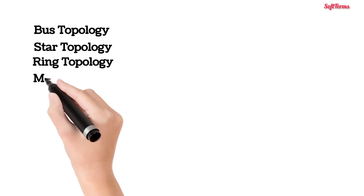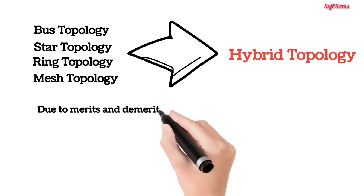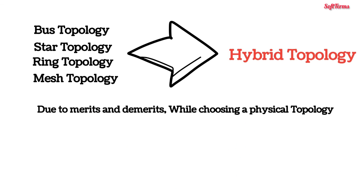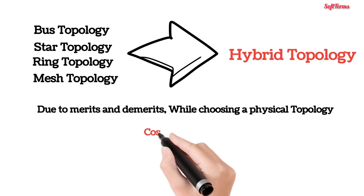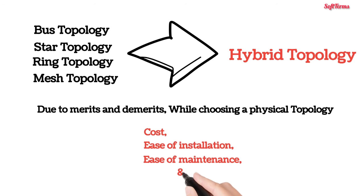All topologies can be interconnected to form a hybrid topology. Every topology has its merits and demerits. So while choosing a physical topology for a network, we should always consider its cost, ease of installation, ease of maintenance, and fault tolerance.